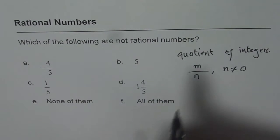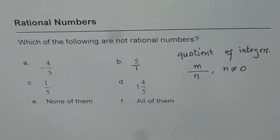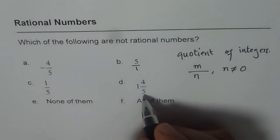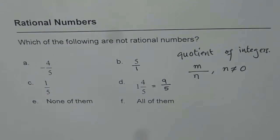All these are written in the form of quotient of integers. You could write 5 as 5 over 1. And this number is also a quotient of integer. It is 5 times 1 plus 4, which is 9. So we can write 9 over 5.